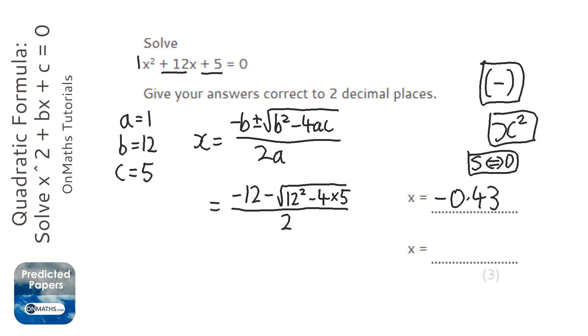When I press equals, it gives me the other answer, which is minus 11.57, because this 7 would move the 6 up to a 7, and those are the two answers.